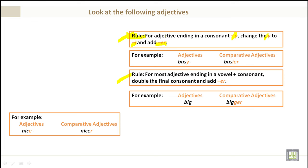Change the Y to I and add ER. For example, busy becomes busier. The second rule: for most adjectives ending in a vowel plus consonant, double the final consonant and add ER. For example, big becomes bigger.